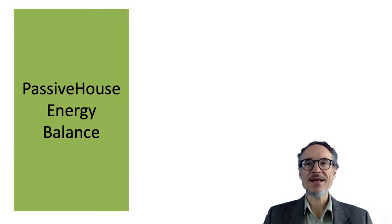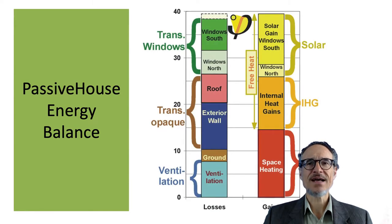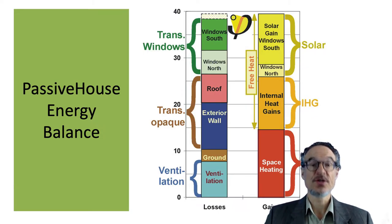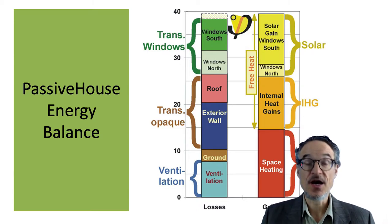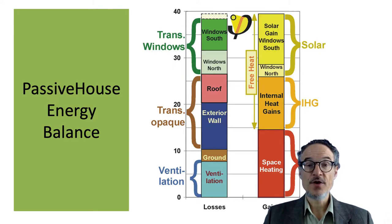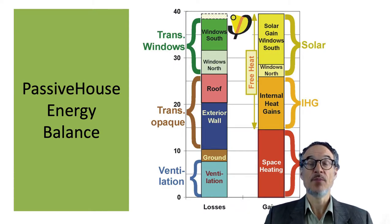In a Passive House, there is a limit for how much heating you can use. All the energy losses — wall losses, floor losses, window losses, and ventilation losses — must be low enough that your heating is below 15 kilowatt hours per square meter per year.